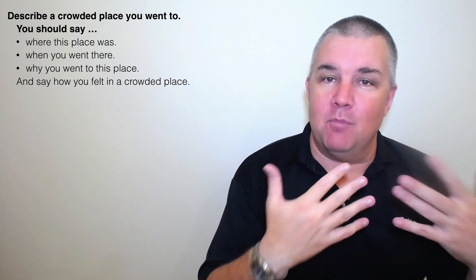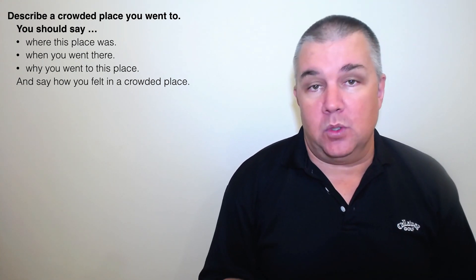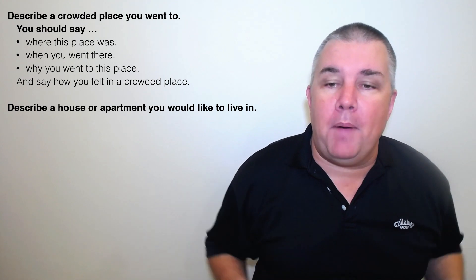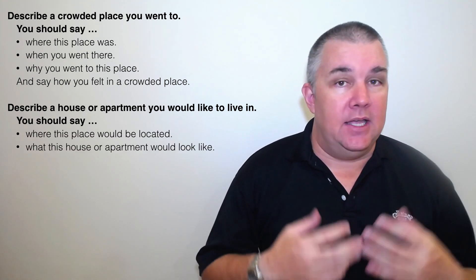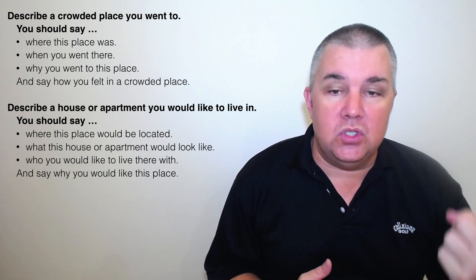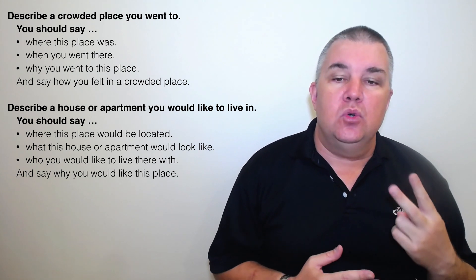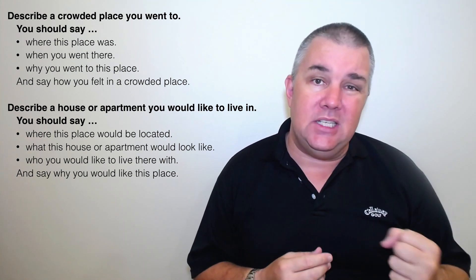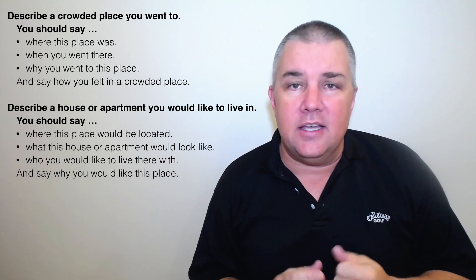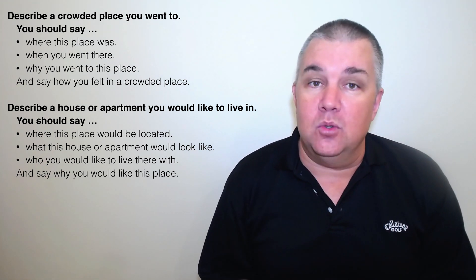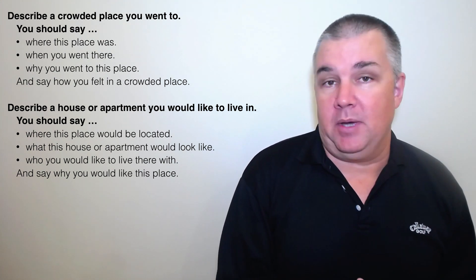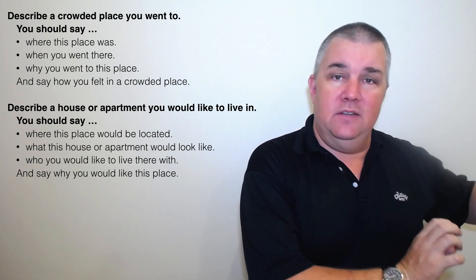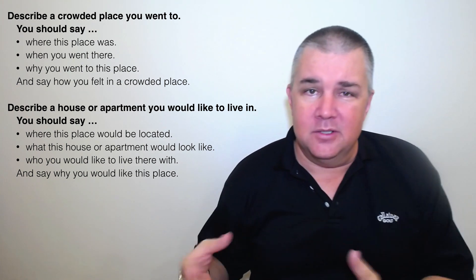The main piece of advice is: give more than one answer for each question, give more details, and show more language. Now the next prompt card is 'describe a house or apartment you would like to live in.' The tense has changed here. You have: where this place would be, what it would look like, who you would like to live there with, and why you would. So use future forms — I would, I might, possibly, it could have. You can use alternatives to 'would' but you are talking about the future. You might have one or two sentences in the past to compare — for example, 'I used to live in an apartment and I didn't like it, so I would like to live in something else.'